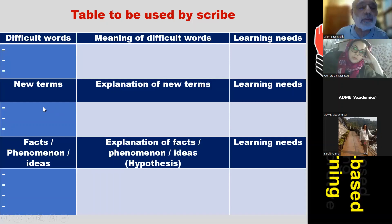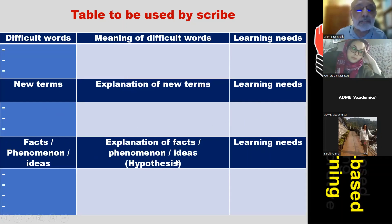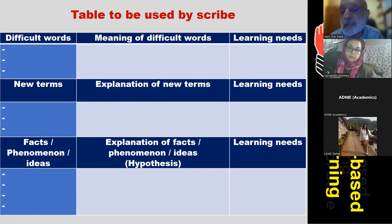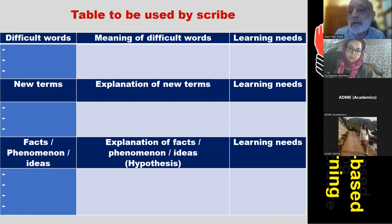Similarly, the new terms learned from the trigger or scenario are noted, and again there may be some learning needs. The most important third step is identifying facts, phenomena, or ideas and trying to explain them — students generate a hypothesis or identify what information is required, and that becomes their learning needs.